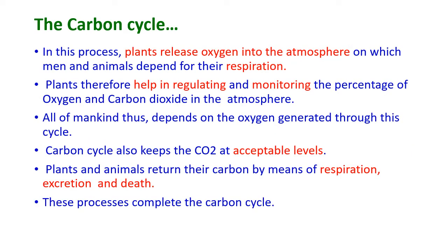In this process, plants release oxygen into the atmosphere, on which humans and animals depend for respiration. Plants therefore help in regulating and monitoring the percentage of oxygen and carbon dioxide present in the atmosphere. All of mankind thus depends on the oxygen generated through this cycle. The carbon cycle also keeps carbon dioxide at acceptable levels in the atmosphere.